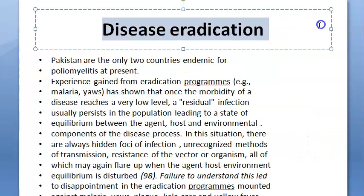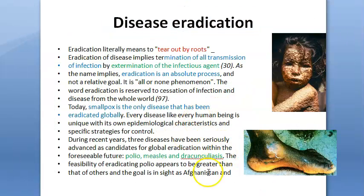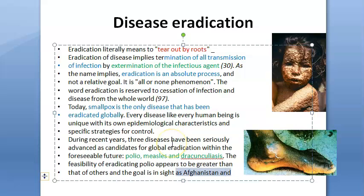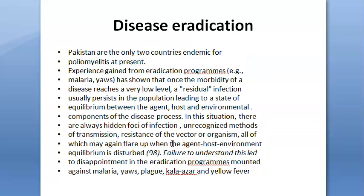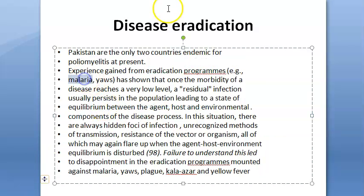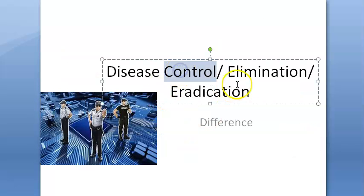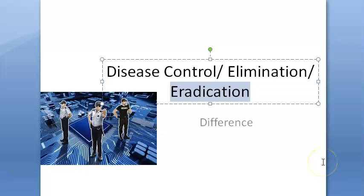So where is polio? Polio is not in India — it is eliminated there. But it is still present in Pakistan, Afghanistan, and Nigeria. WHO is working hard on all this. Basically how do you progress? You start with control, then move to regional elimination, and finally possible eradication.